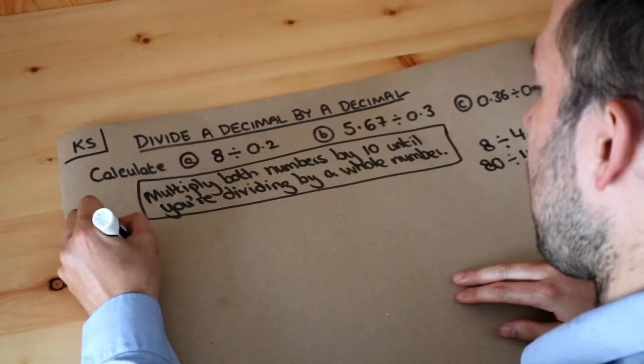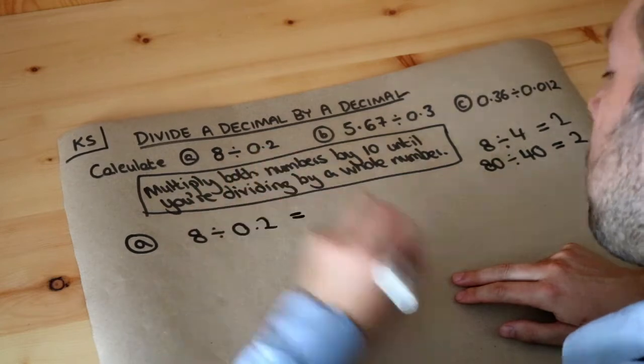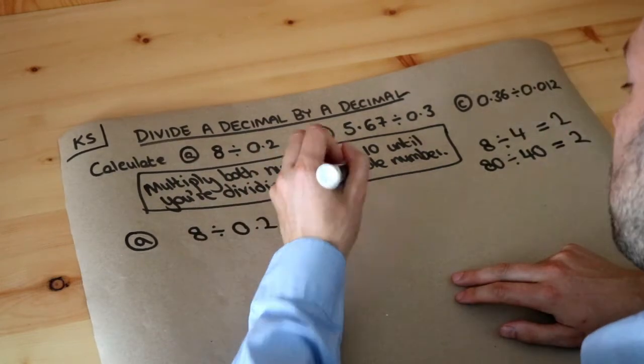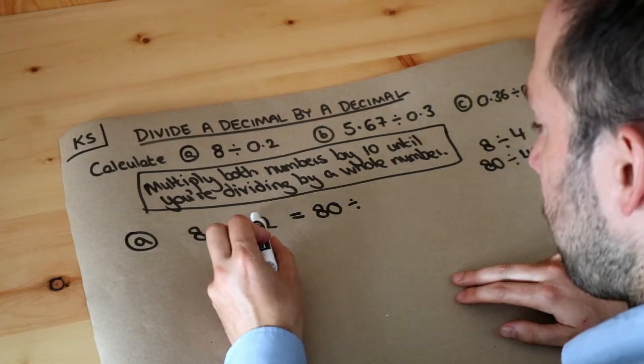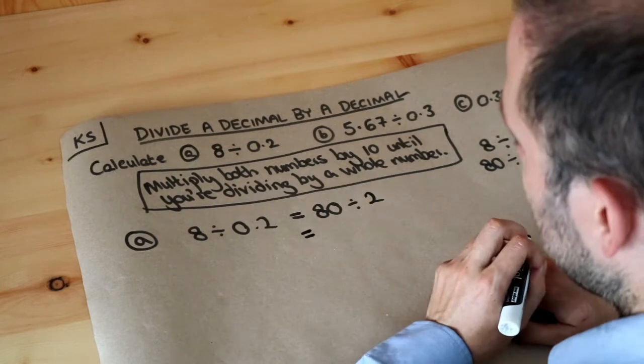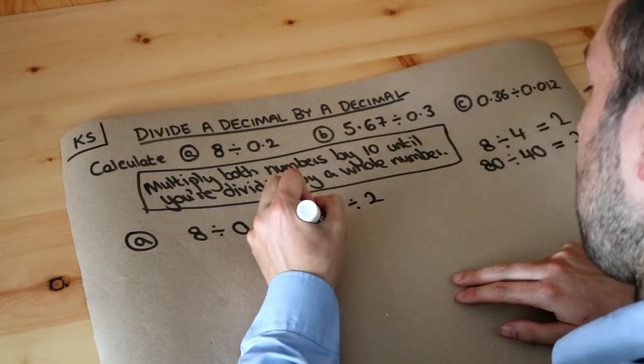So let's do that with (a): 8 divided by 0.2. If you times both of them by 10, we get 80 divided by—well, we times this by 10, we just move the decimal point and we get 2. So now we've got 80 divided by 2, and that's relatively simple. When we halve 80, we get 40.